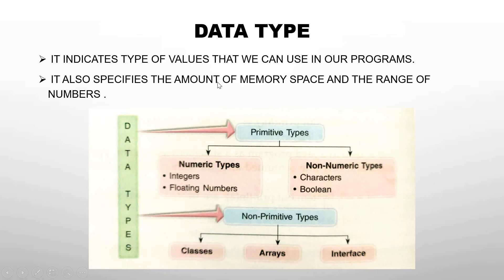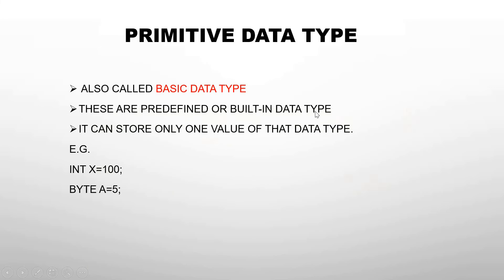Data type also specifies the amount of memory space and the range of numbers. For integer type, it will allocate 4 bytes of memory space. For example, declaring an int variable allocates 4 bytes in memory.